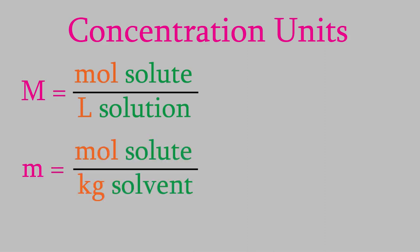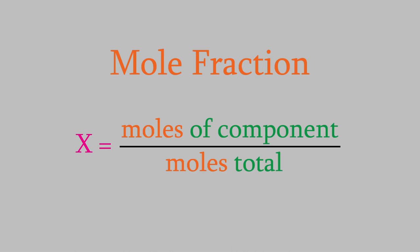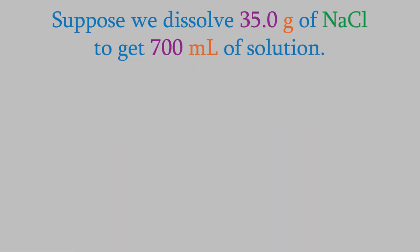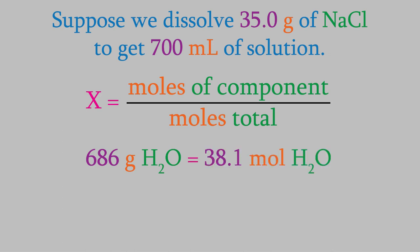We've seen two different concentration units: molarity and molality. Let's look at another one. A useful new unit is the mole fraction, which has the symbol x. When we have more than one ingredient in a solution, the mole fraction for a particular component is the moles of that ingredient divided by the total moles for all the components. Let's find the mole fraction for each component in our NaCl solution. We have two ingredients: water and NaCl. For the mole fraction of water, first we need to know the moles of water. We figured out we have 686 grams of water, which from the periodic table turns out to be 38.1 moles.